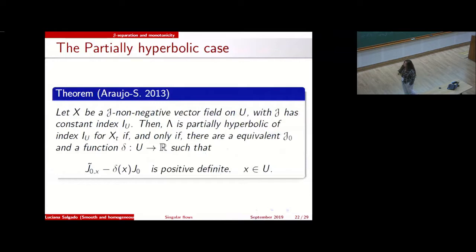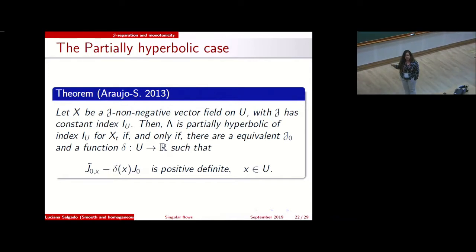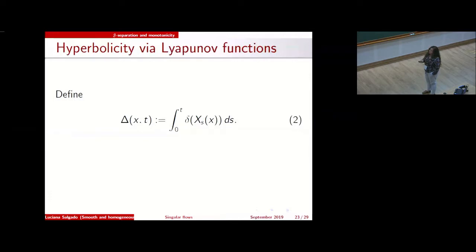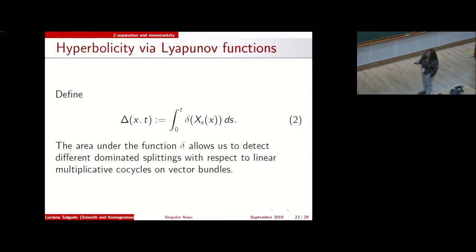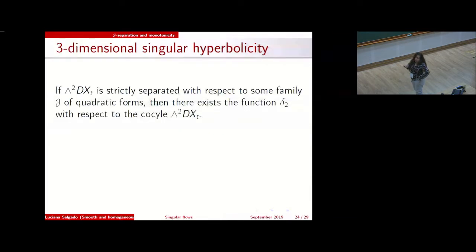We obtain this operator — the derivative of the vector field (not the flow), together with its adjoint. The characterization of partial hyperbolicity for flows is: partial hyperbolicity holds if and only if a certain quadratic form is positive definite, which is the extension to flows of the classical result for hyperbolic diffeomorphisms. By taking a function delta and integrating it, we can detect different dominated splittings and hyperbolicity over vector fields, with a similar definition for the second exterior power.